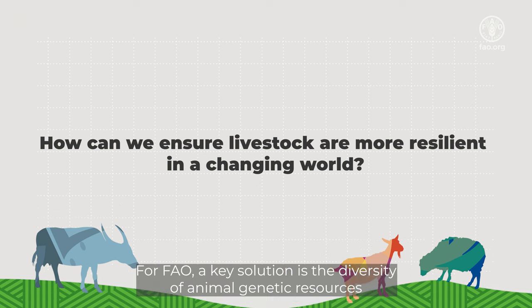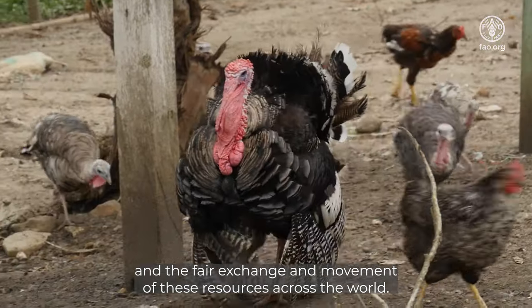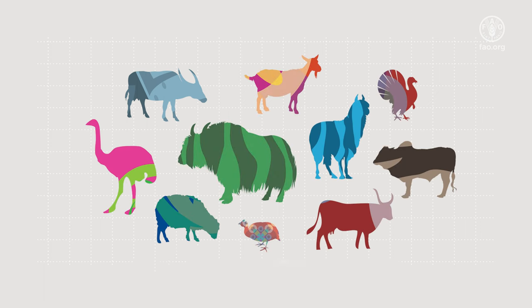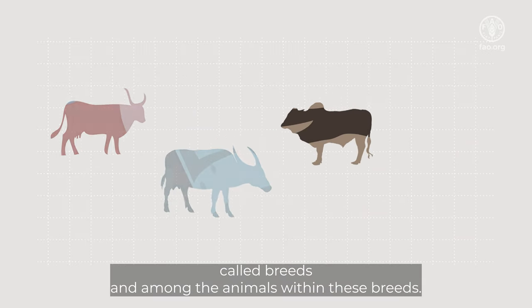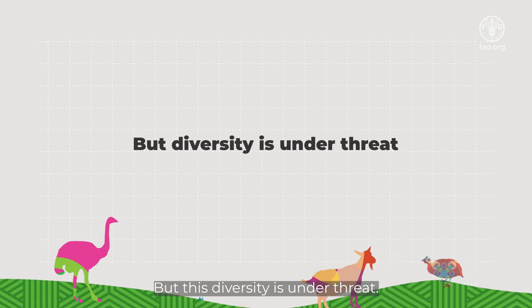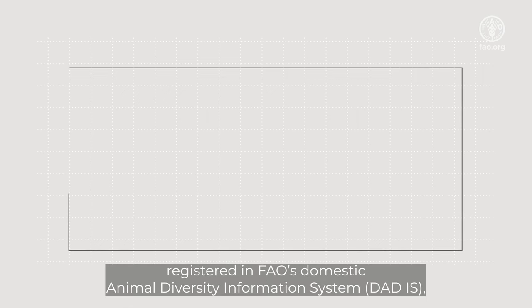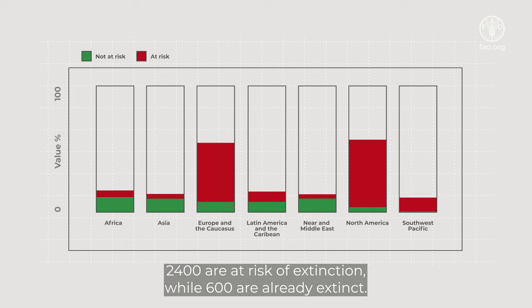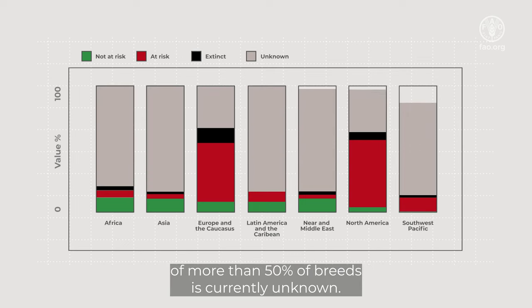For FAO, a key solution is the diversity of animal genetic resources and the fair exchange and movement of these resources across the world. Today, the genetic diversity of livestock is distributed across 40 species in separate populations within these species called breeds, and among the animals within these breeds. But this diversity is under threat. Out of 8,900 breeds registered in FAO's Domestic Animal Diversity Information System, DAD-IS, 2,400 are at risk of extinction, while 600 are already extinct.